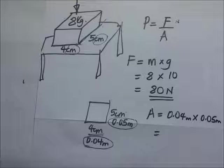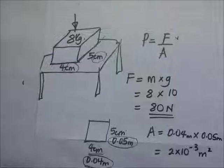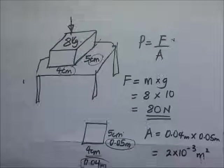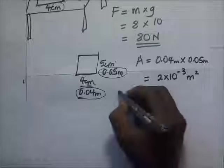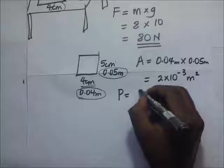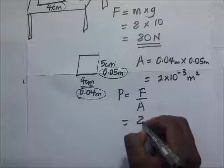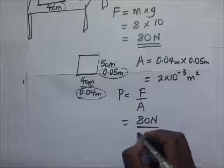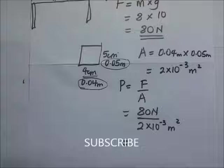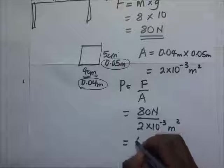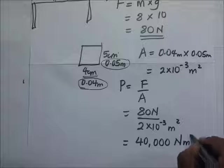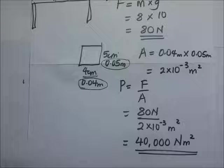After getting our force in Newtons and our area in meters squared, we can say that pressure equals force over area: 80 Newtons divided by 2 × 10⁻³ meters squared, and our answer is 40,000 Newtons per meter squared, or 40,000 Pascals.